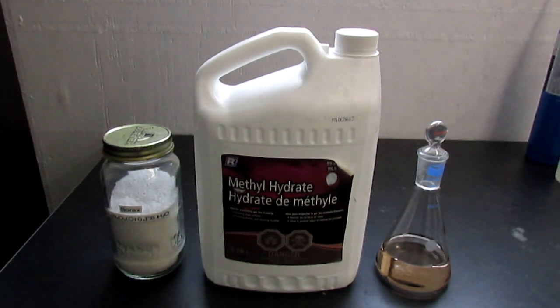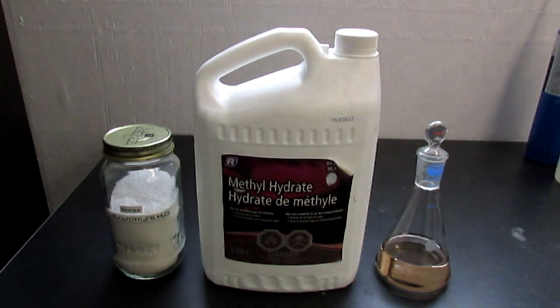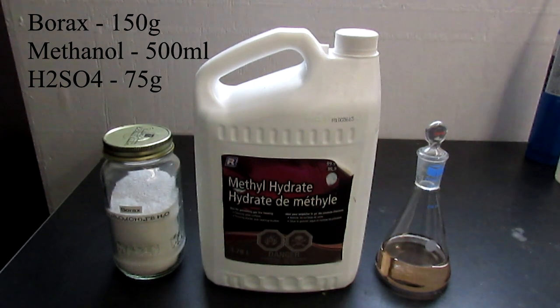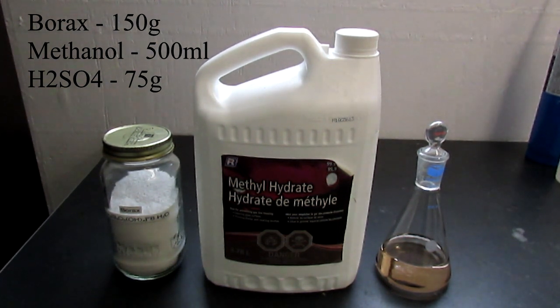Today I'm going to be making trimethyl borate, and to do this you're going to need 150 grams of borax, 500 milliliters of methanol, and 75 grams of 98% sulfuric acid.